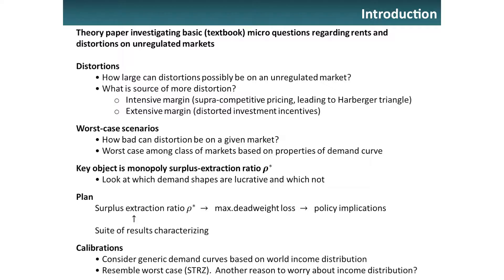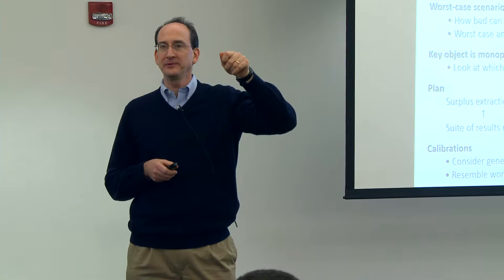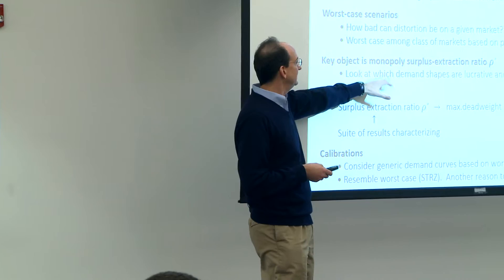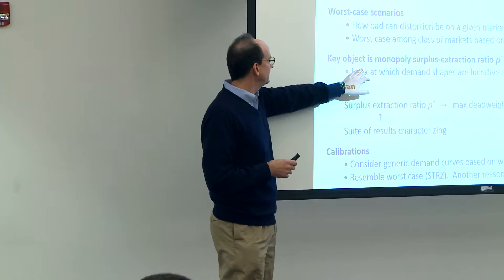One question is how this theory paper is going to be related to the other empirical papers. I think it comes down to the fact that we use the term rho. For me, rho is going to be this monopoly surplus extraction ratio — the ratio of what the monopolist earns to the total potential first-best surplus in the market. The key issue is: when is that big? When is this market good for a monopolist?